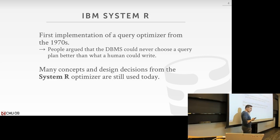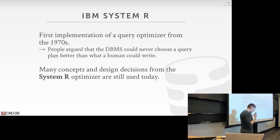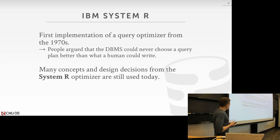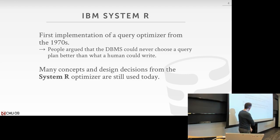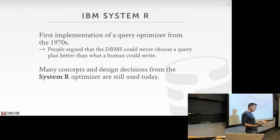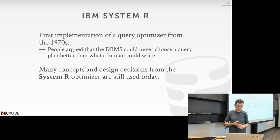IBM proved back in the 1970s that you could take a declarative language like SQL and have the query optimizer generate a query plan that was as good, if not better, than what a human can actually do — or at least the average human. We'll talk about how the System R optimizer works, and the design decisions and assumptions they made about data and query plans to simplify the problem are still actually used in practice today.